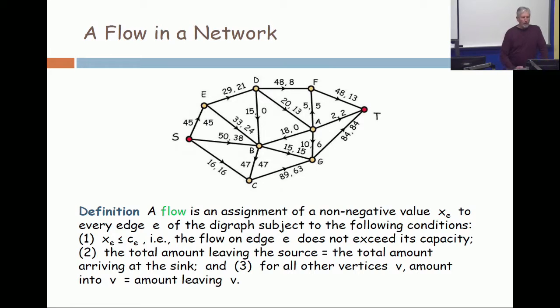Okay, a flow in a network is an assignment of non-negative numbers to the edges. The flow on an edge can never exceed the capacity of the edge. And then you have these conservation laws.